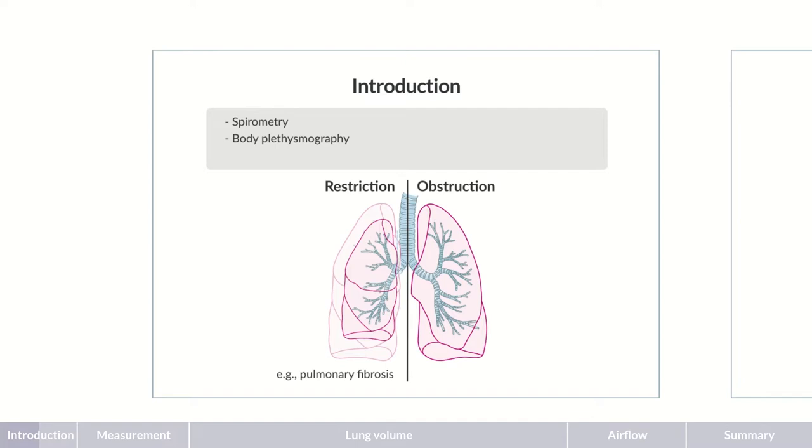In contrast, obstructive lung diseases are characterized by narrowing of the bronchi, leading to difficulties exhaling air. Common diseases that cause obstruction are bronchial asthma and chronic obstructive pulmonary disease, in short, COPD.